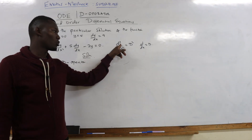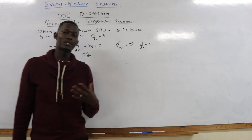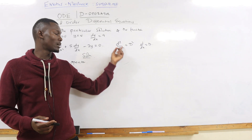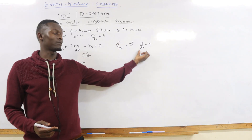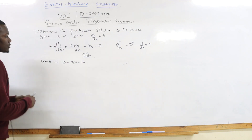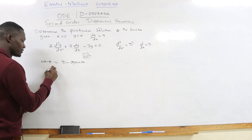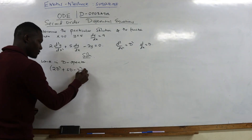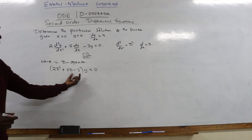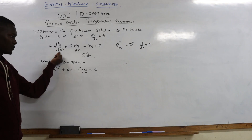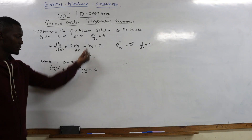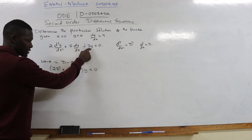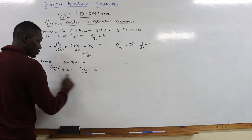The reason there's no y written with the D terms is because y represents a function — it can be any letter like P or Q. We are only focusing on the derivatives themselves, first degree and second degree. So we rewrite in D operator form: 2D² + 5D − 3, with y factored outside, equals 0.